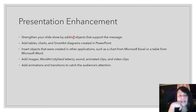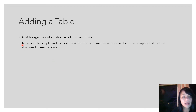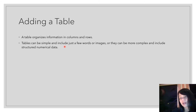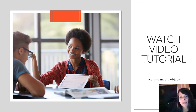You can really strengthen your slideshow by adding objects that support your message. Instead of more words, use tables, charts, SmartArt diagrams, or objects from other applications like a chart from Excel or a table from Word. You can add images, WordArt, sound, animated clips, video clips, and animations and transitions. A table organizes information in columns and rows and can be simple with a few words, or complex with structured numerical data. Please watch the video tutorials on creating a table on a new slide and on inserting media objects.